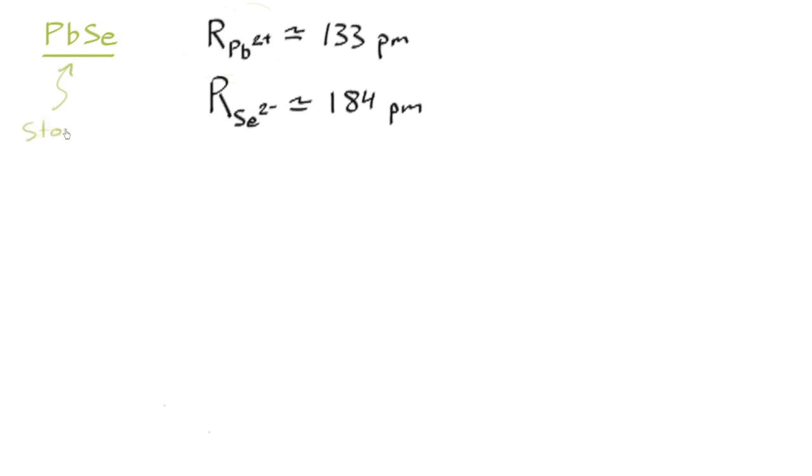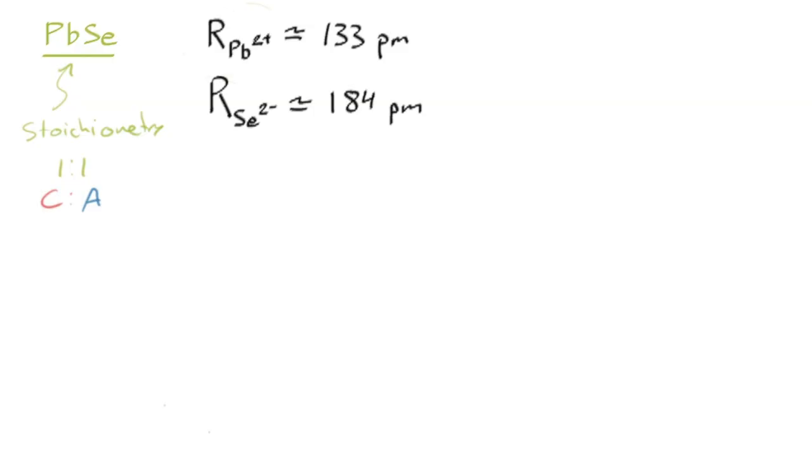So the first thing that we'll notice is the stoichiometry. The stoichiometry is clearly one to one, one cation to every anion, using a nice color convention that I like to use. So without further ado, we could say...